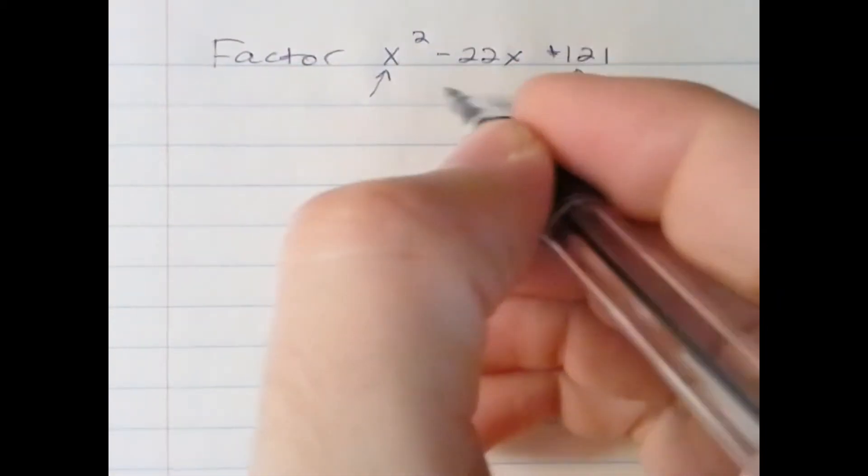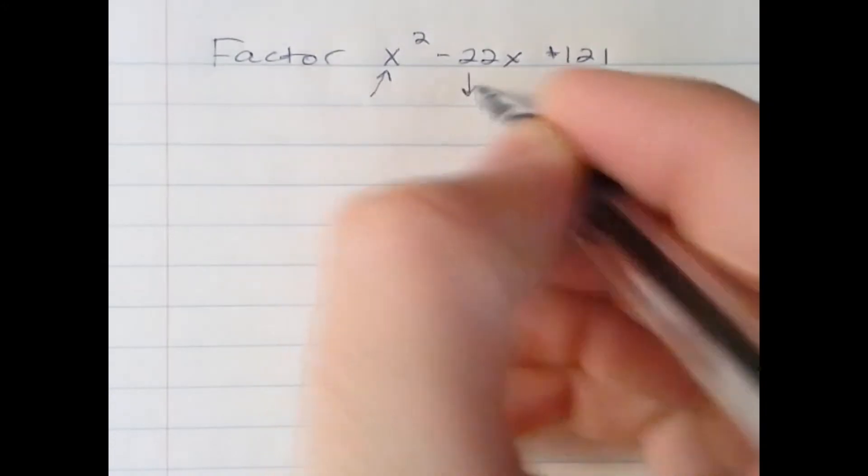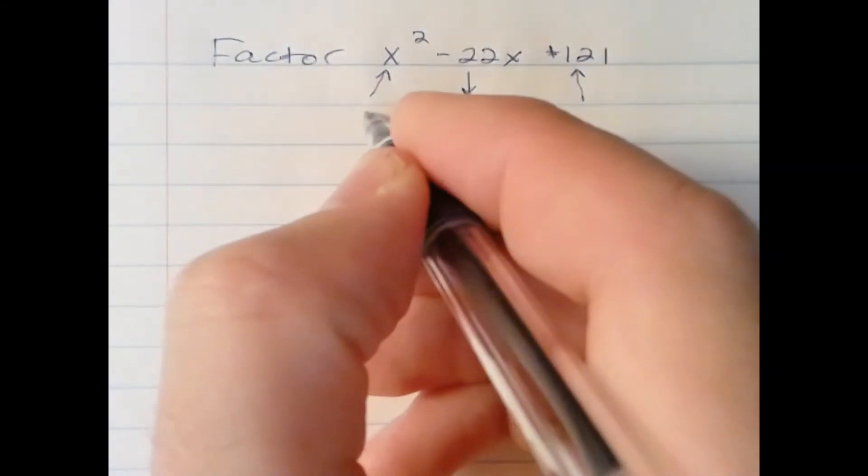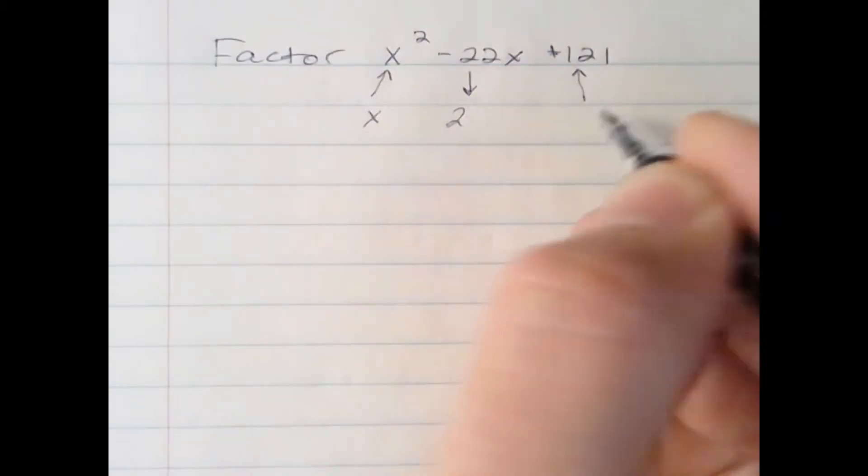The middle term should be twice the square roots of the first and last terms.